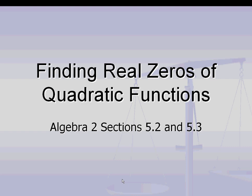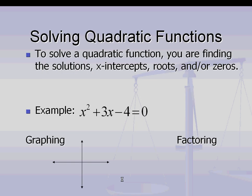This lesson is on finding real zeros of quadratic functions. This is section 5.2 and 5.3 in the Algebra 2 book. When you are solving a quadratic function, you are finding the solutions, the x-intercepts, roots, and/or zeros. All of those terms mean the same thing.